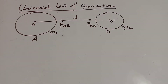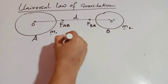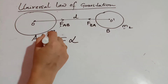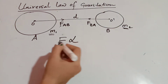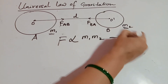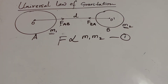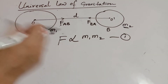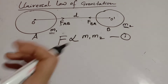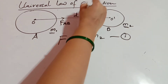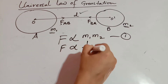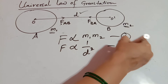From the definition, the force is directly proportional to the product of their masses M1 and M2, so F ∝ M1·M2 — call this equation 1. The second statement says the force is inversely proportional to the square of the distance between them, so F ∝ 1/D² — call this equation 2.